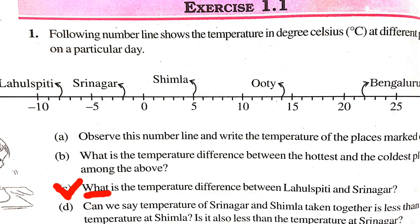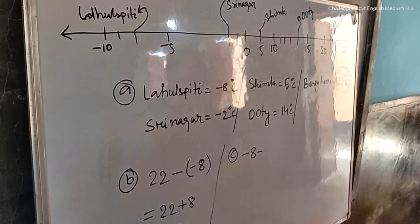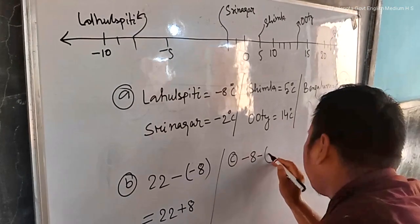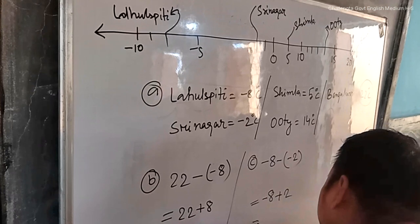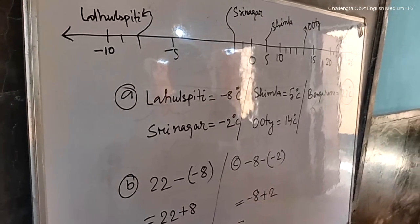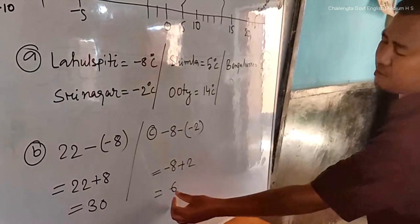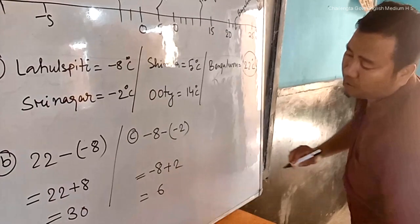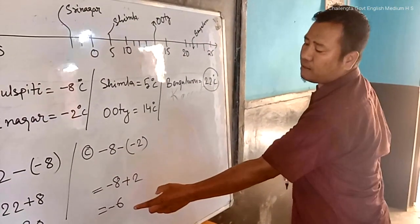And we have question number C: What is the temperature difference between Lahul Spiti and Srinagar? That is minus 8 minus minus 2. You will have minus 8 plus 2. As you know, minus plus is minus, so minus 8 minus 2 is 6. It will be negative as 8 is greater than 2. So your answer is minus 6.